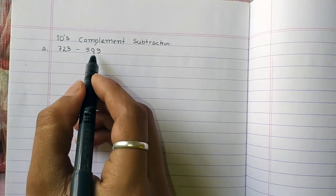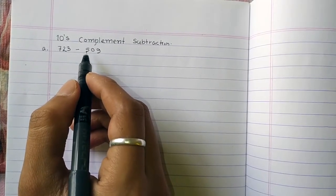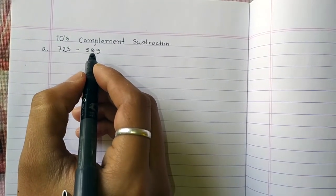This is subtraction. If we are going to take a 10's complement, we are first going to take a 9's complement of 509.